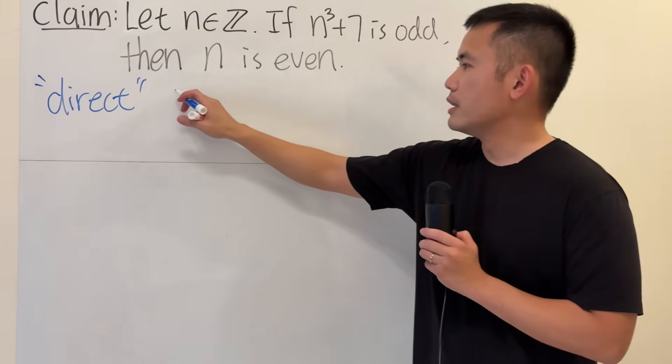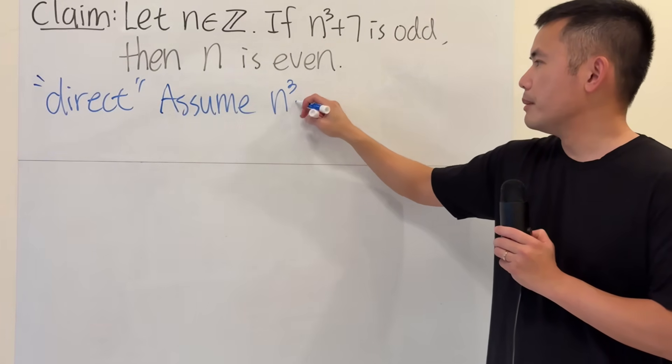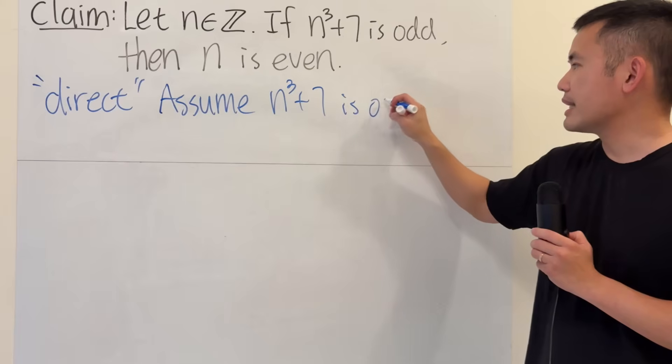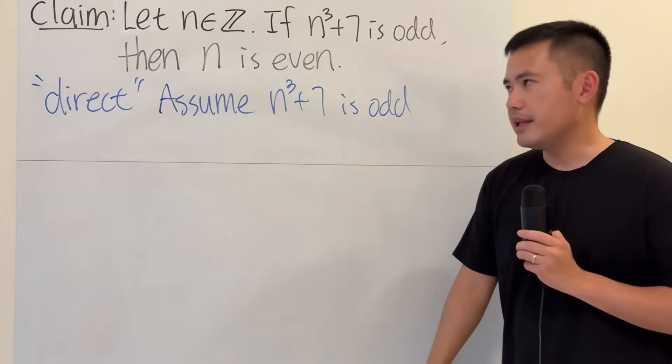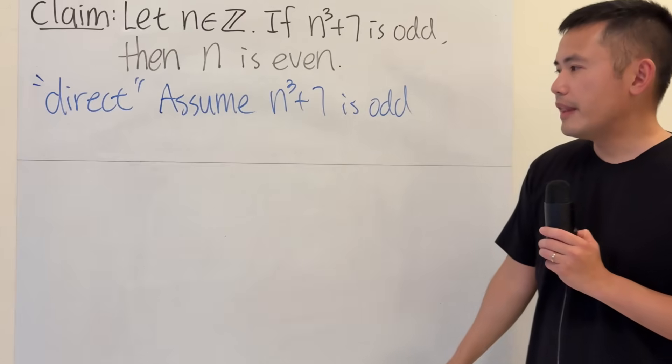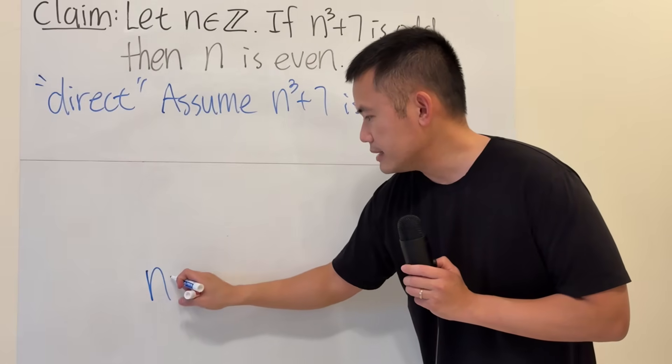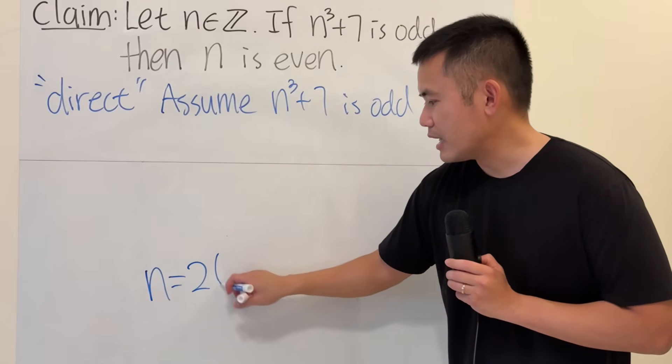First, we'll take this assumption. Assume n cubed plus 7 is odd. Then, we will have to satisfy this right here. And to show n is even, that means that we have to somehow do some work and show that n is equal to 2 times some integer.